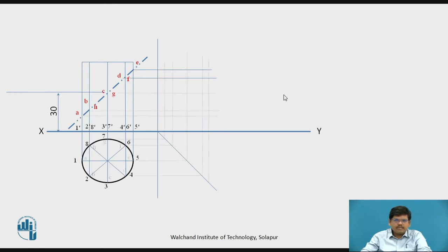We project each and every point to get the required view of the cylinder. So, the point 2 and 4. Point 2 and 4. Point 3. Point 7. Point 8 and 6. Similar points from here.